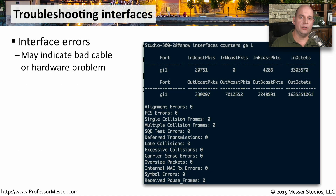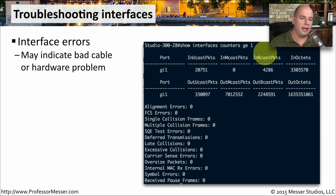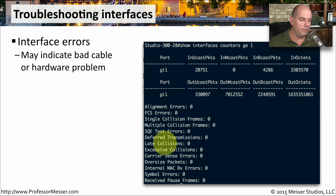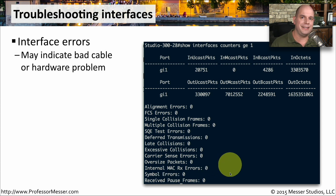If you look into the details in your operating system, or on a switch, router, or other networking device, you'll often find a number of statistics associated with the network interface. This is one on my switch — it shows a port, the number of unicast, multicast, and broadcast packets in and out, and the number of octets in and out. Right underneath that, it shows all the different errors that could be occurring across that link. You can monitor the interface and see if any error counters are increasing, which may indicate a communication problem between the switch and the other device.